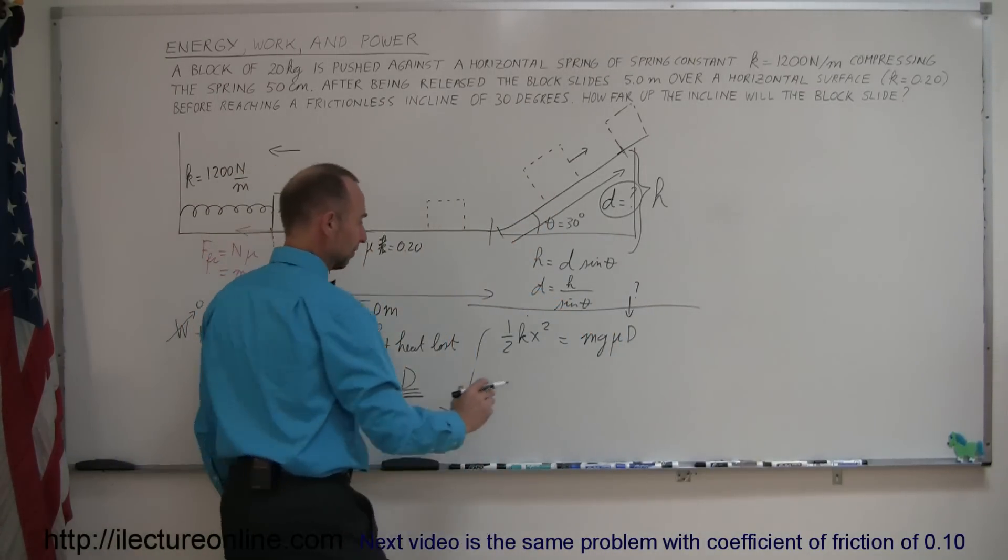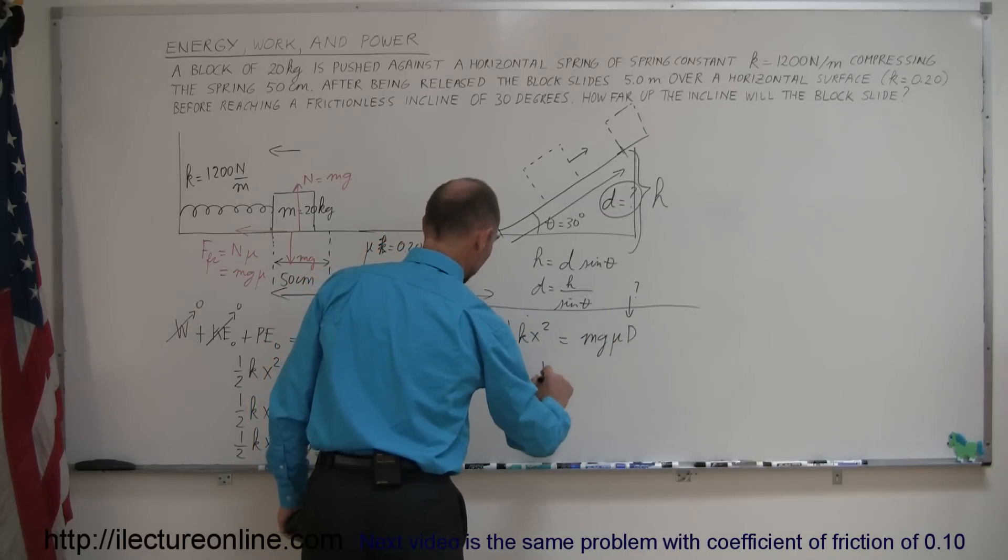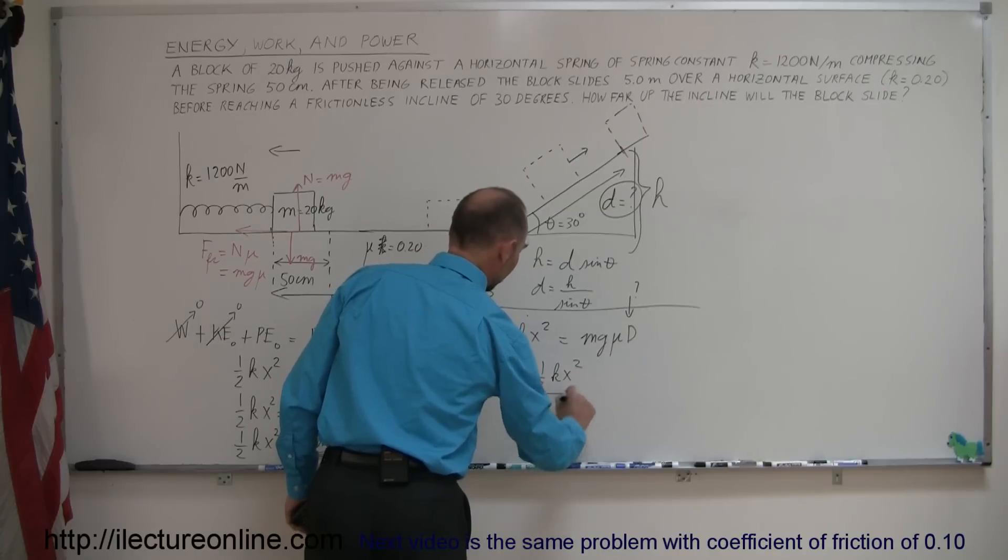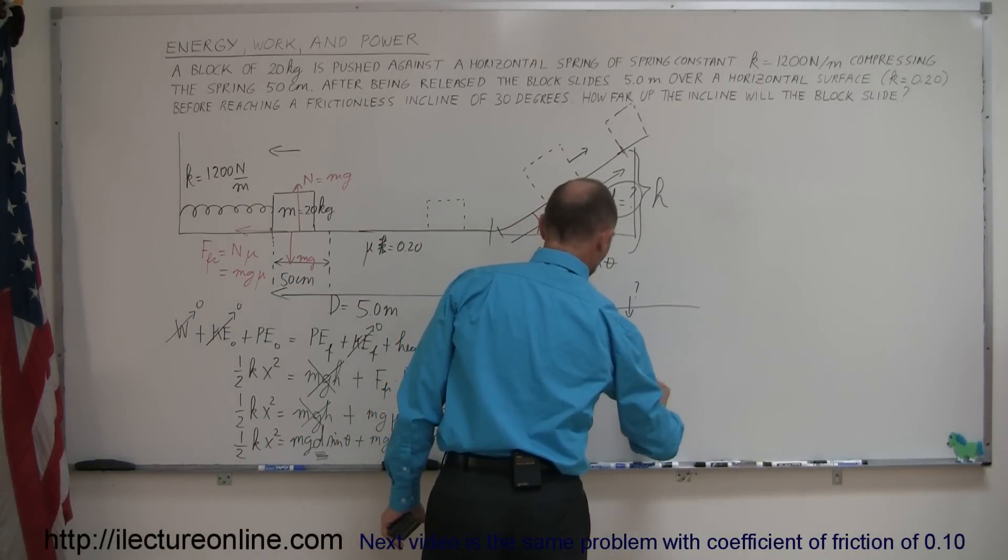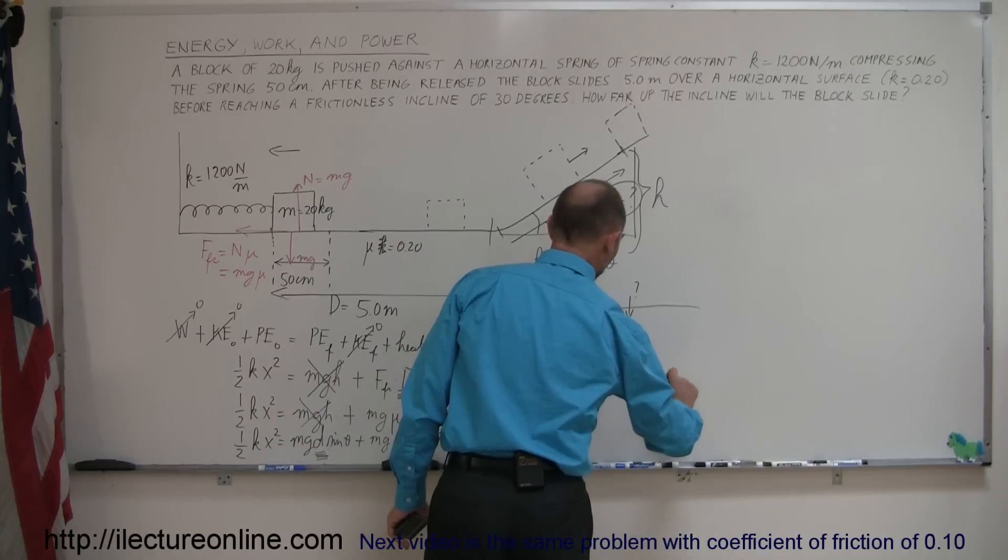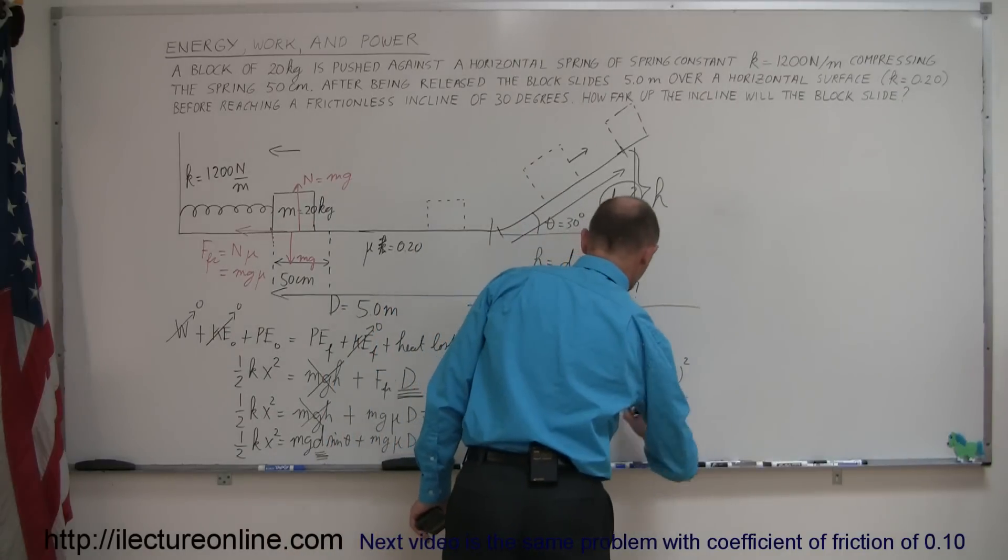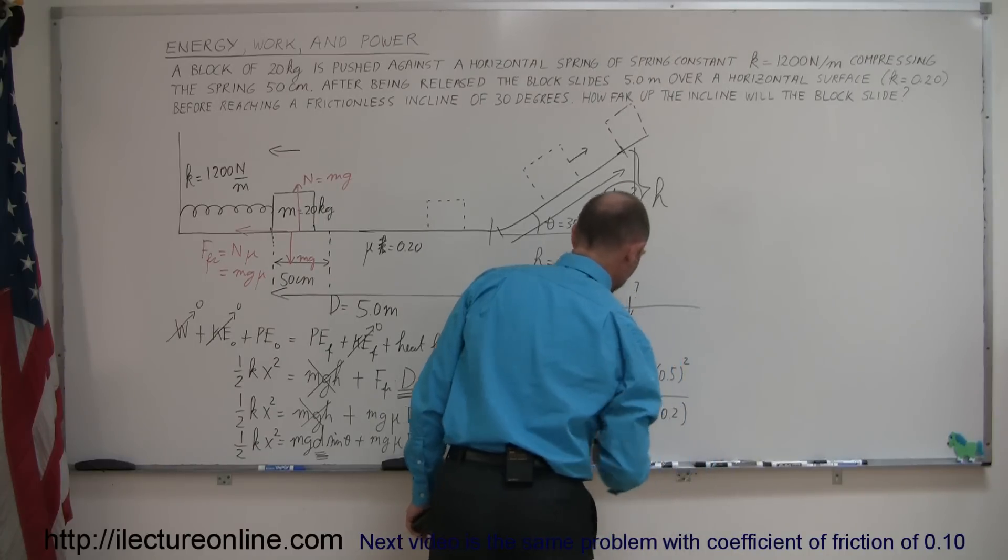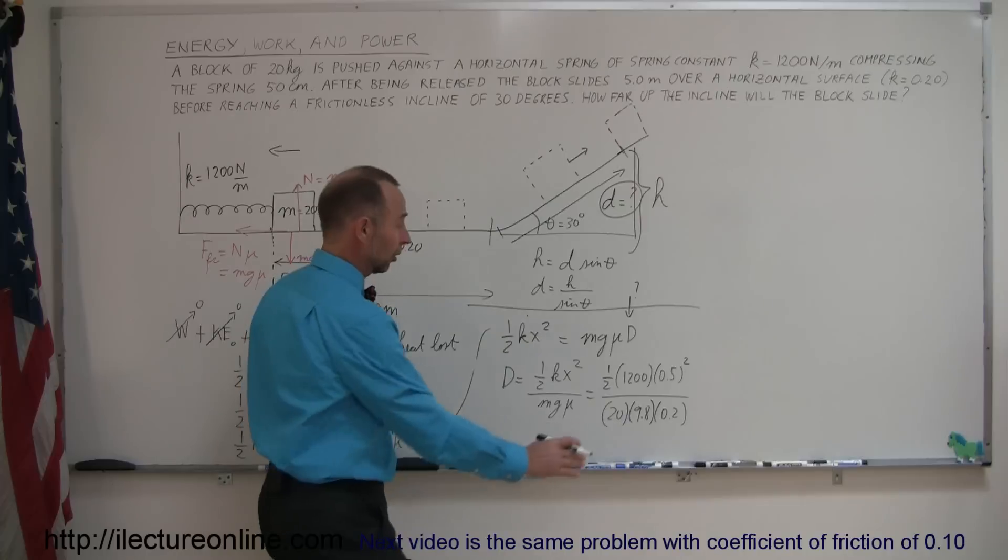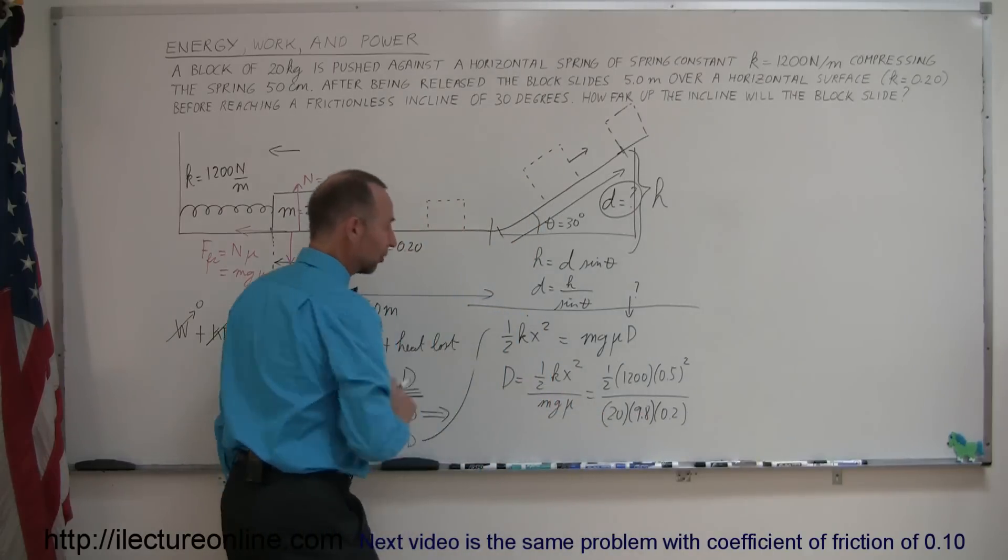So solving that equation for D, I divide both sides by MGμ, and we turn the equation around. So we have D equals ½kx² divided by MGμ. And now we plug in the values of those. So we have ½ times 1,200 times 0.5 squared. Remember, centimeters need to be converted to meters. Divided by the mass, 20 kilograms times G, 9.8 times mu, 0.2. Again, if I use standard units, newtons per meter, meters, kilograms, meters per second squared, I will get distance in meters.